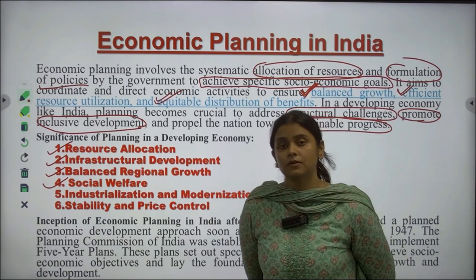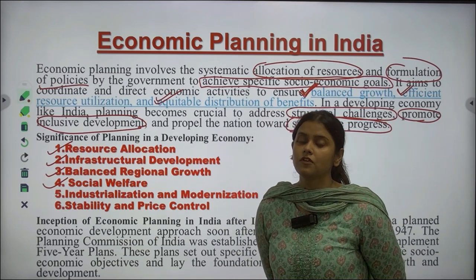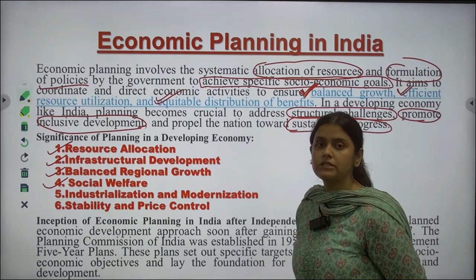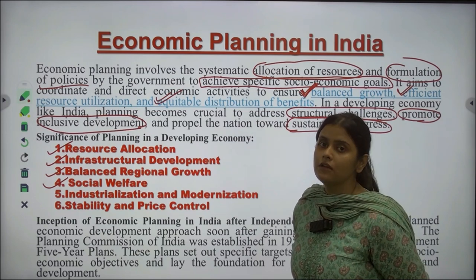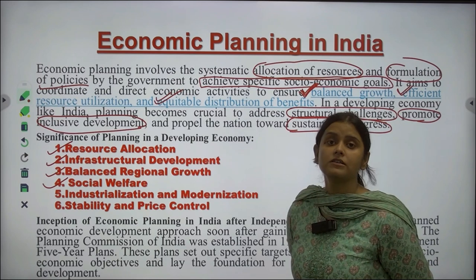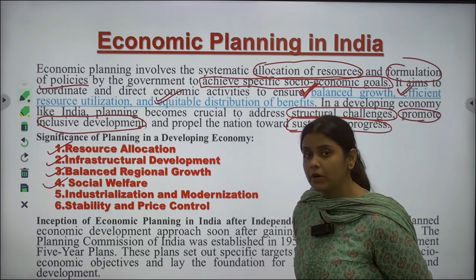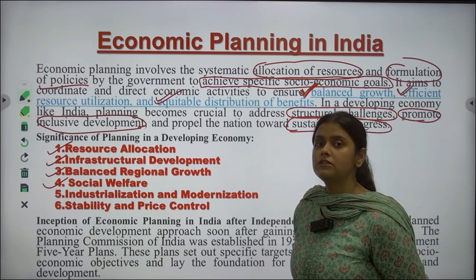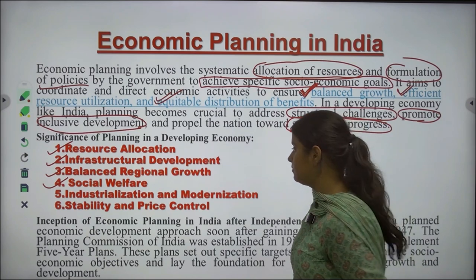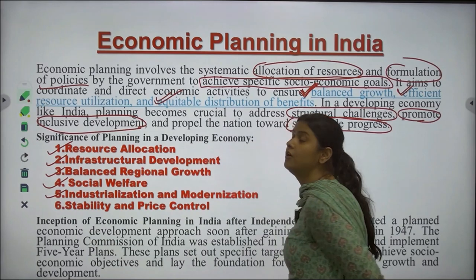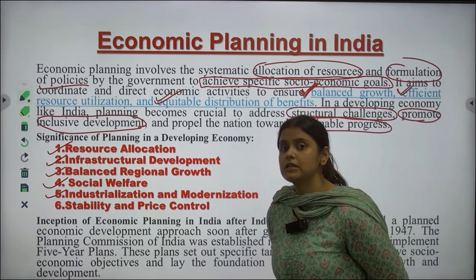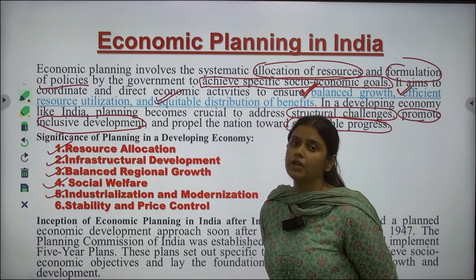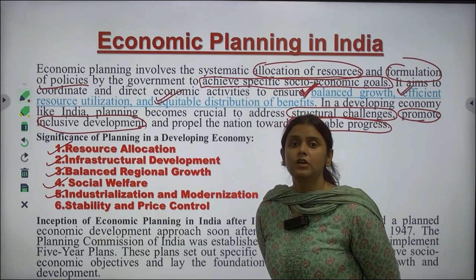Industrialization and modernization: on one hand, industrialization is essential for the growth of any country — increasing domestic sectors and industries. And modernization of the agriculture sector is also important, keeping in view that sustainable growth and development is not harmed. That means the environment and regional development are also adhered to. Next is stability and price control — prices should be kept equal and stable across India, not influenced by inflation and deflation, helping the growth of the economy as a whole.